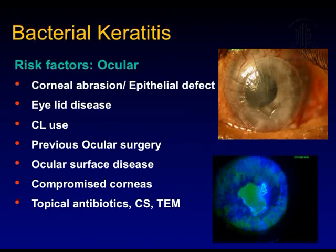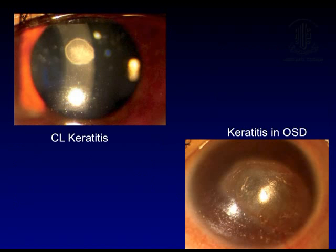Bacterial keratitis can be caused due to various reasons. The risk factors could be ocular in the form of epithelial defect, eyelid disease, contact lens use, previous ocular surgery, ocular surface disease, compromised corneas, and topical medications such as steroids and traditional eye medicine. These are two cases due to contact lens-induced keratitis and keratitis in a dry eye.